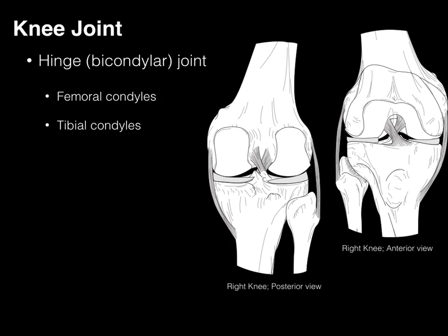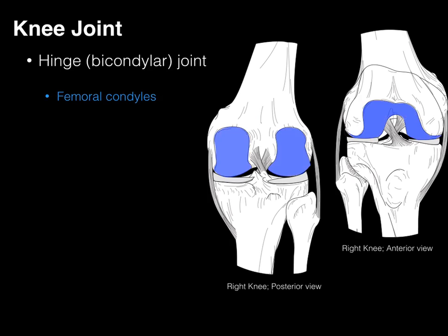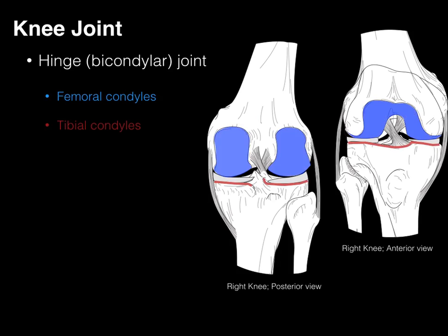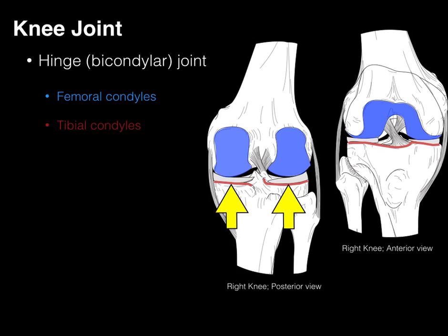The two articulating surfaces are the femoral condyles that articulate with the tibial condyles. Together, they make this hinge joint. It's called a bicondylar joint because we have two femoral condyles articulating with two tibial condyles, primarily giving us hinge joint movements.